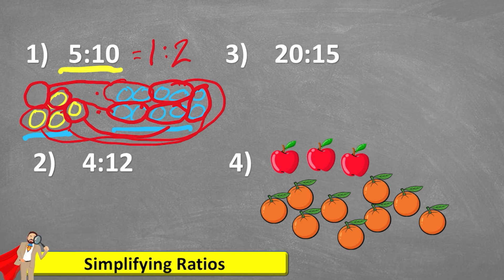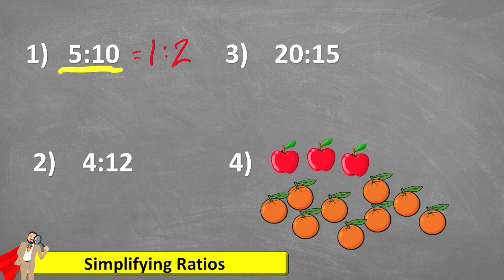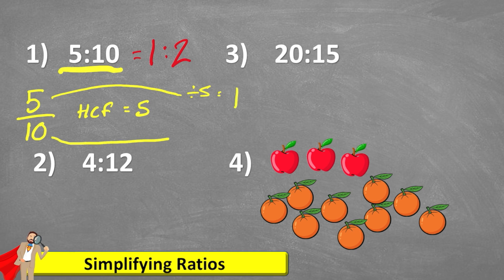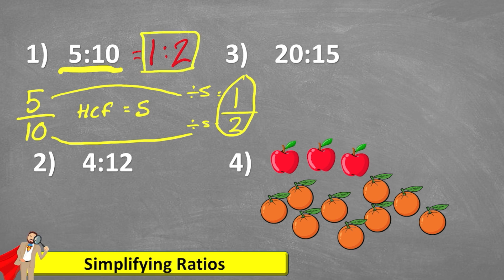But it's not always convenient to draw pictures, so we need another method. We know that ratio is very similar to fractions. 5 to 10 is the same as saying 5 over 10. And what we know about fractions is that to simplify, what we do to the numerator we must do to the denominator. We're looking for the highest common factor of these two numbers. The highest common factor of 5 and 10 is 5. So I divide my 5 by 5, which leaves me with 1, and I divide my 10 by 5, leaving me with 2. Therefore my simplified fraction is 1 over 2, and my simplified ratio is 1 to 2, just like we proved before.